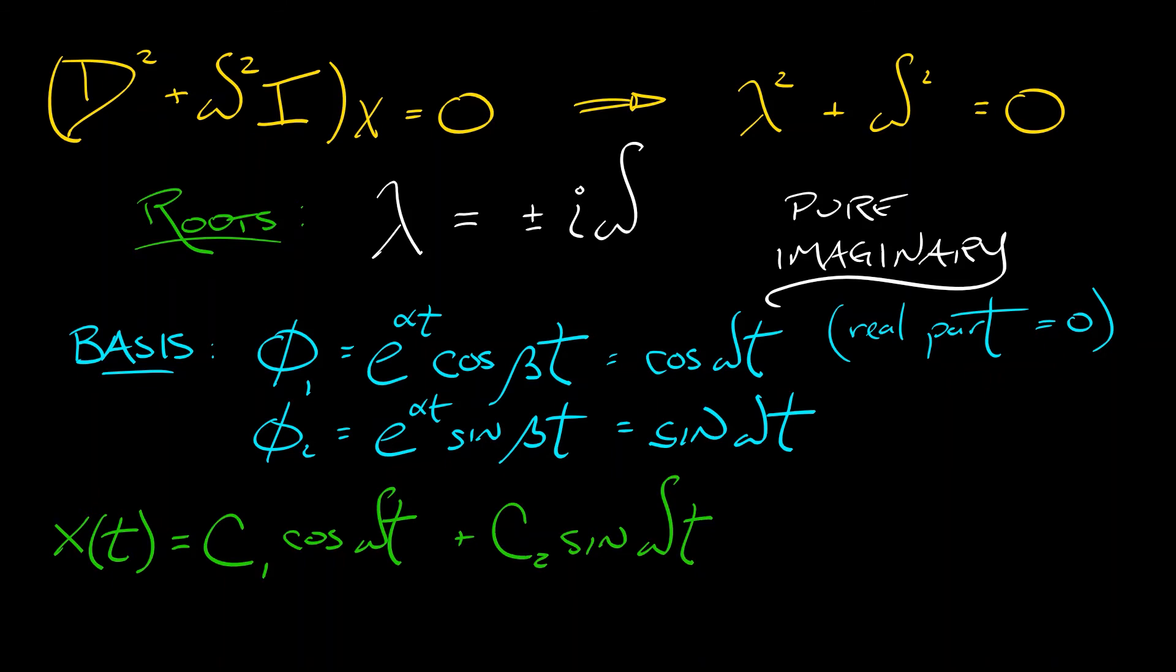It's often written out with a little bit of algebraic manipulation into C times sin(ωt + ψ), where this ψ is a phase angle, phase shift, and this capital C is an amplitude. You don't need to do that. That's just something you often see.